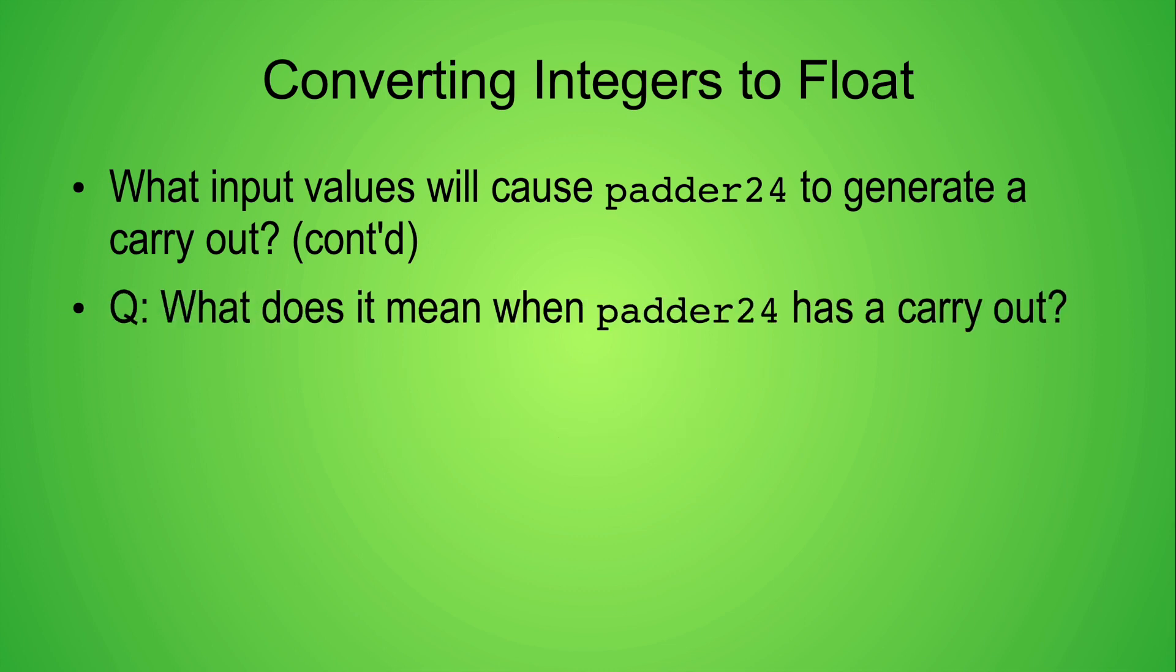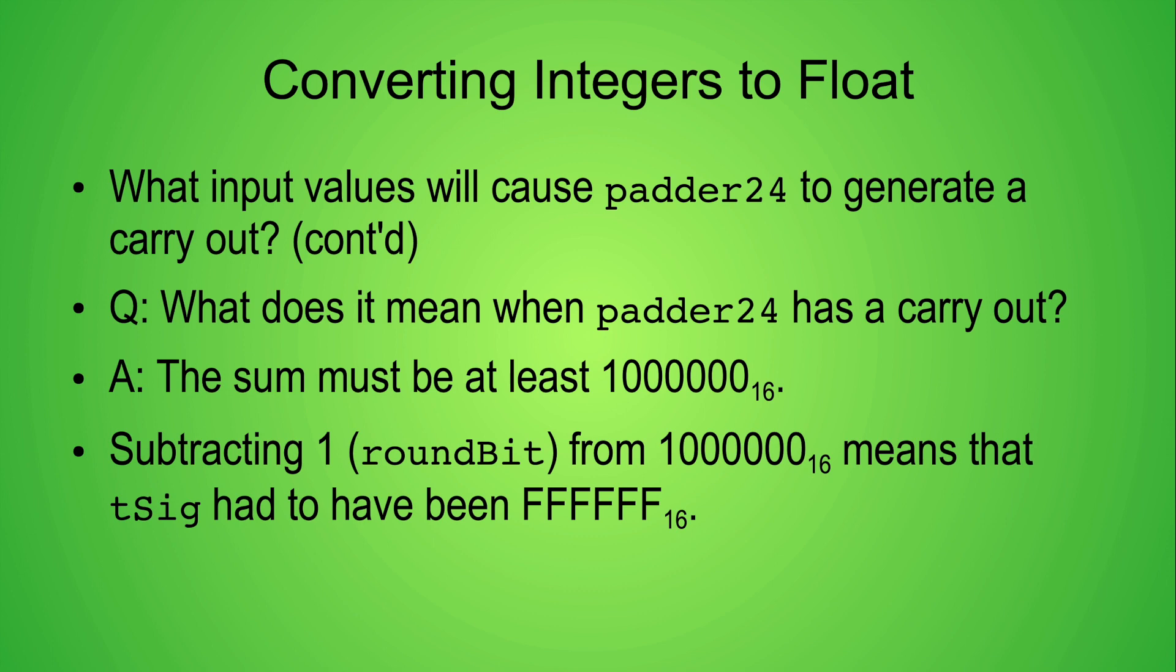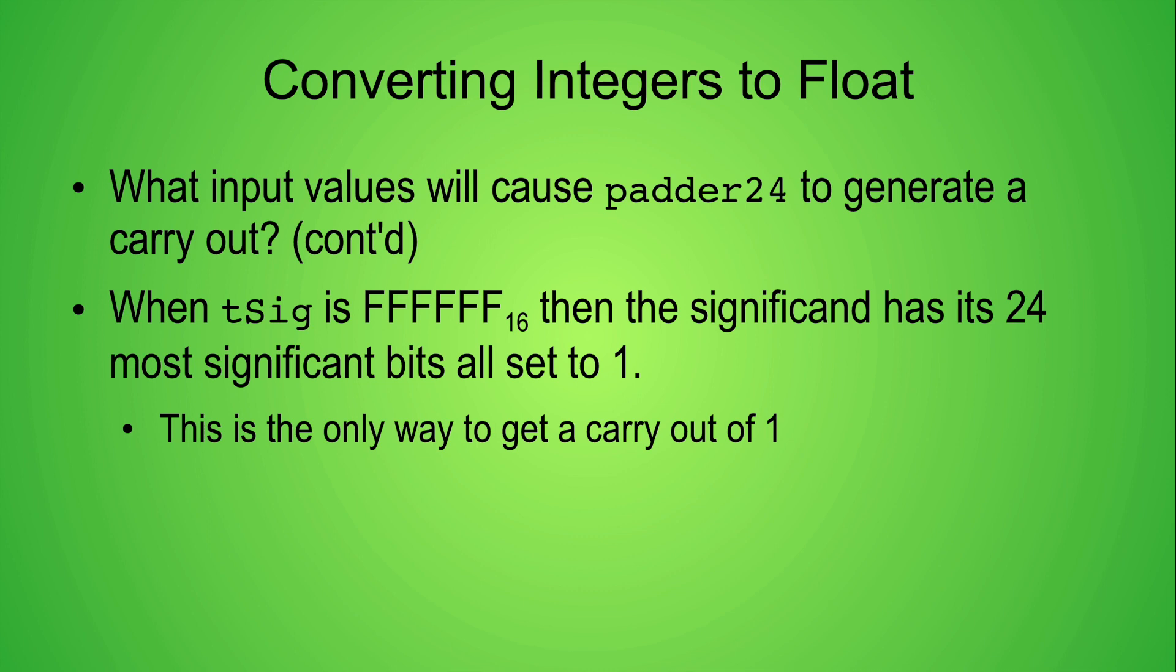Next we need to ask ourselves what does it mean when the carryout bit is 1? It means that the sum won't fit into a 24-bit result. That is, the sum has to be at least hexadecimal value 1 followed by six zeros. If we subtract the roundBit value 1 from this number we get the hexadecimal value FFFFFF. This means that the significand which we're rounding has to have its 24 most significant bits set to 1. This is the only way to get a carryout of 1.